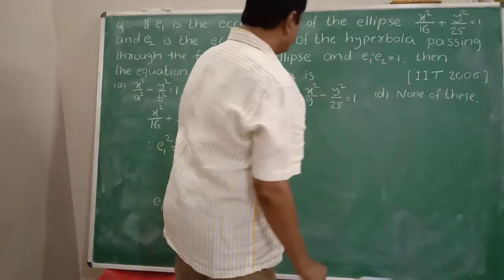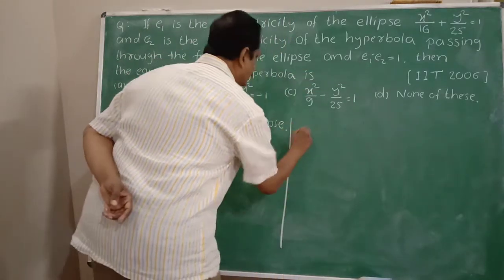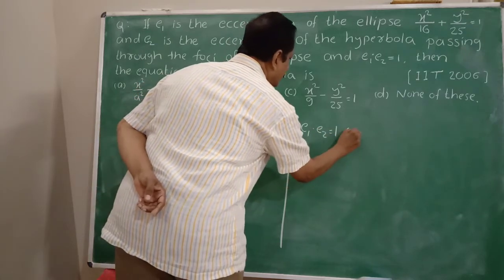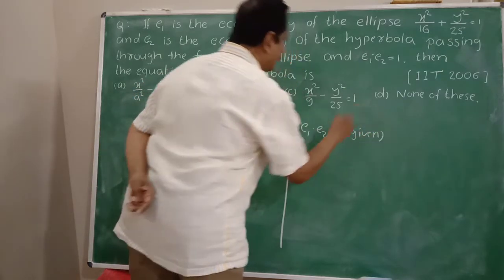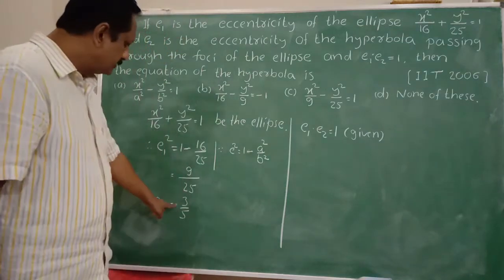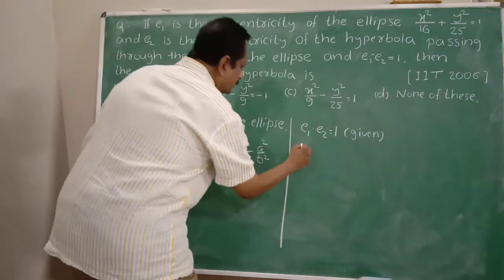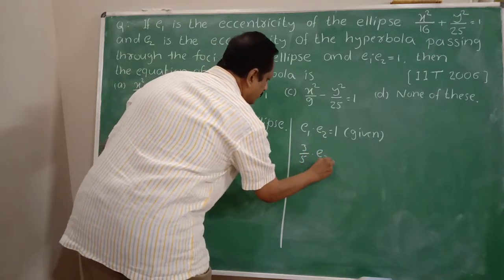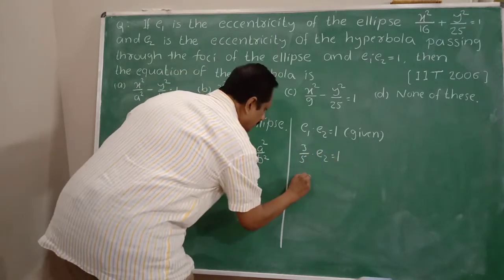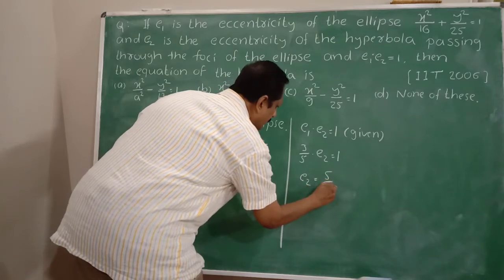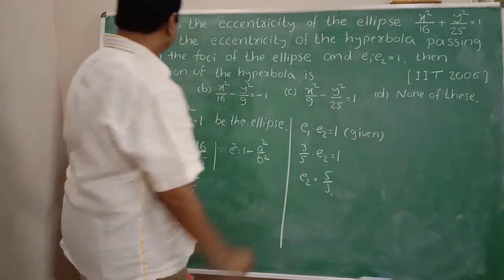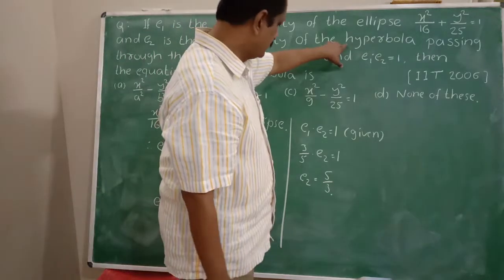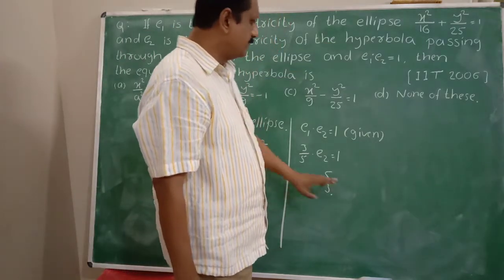Since e1 × e2 = 1, and e1 = 3/5, we have (3/5) × e2 = 1. Hence, e2 = 5/3. So e2, the eccentricity of the hyperbola, is equal to 5/3.